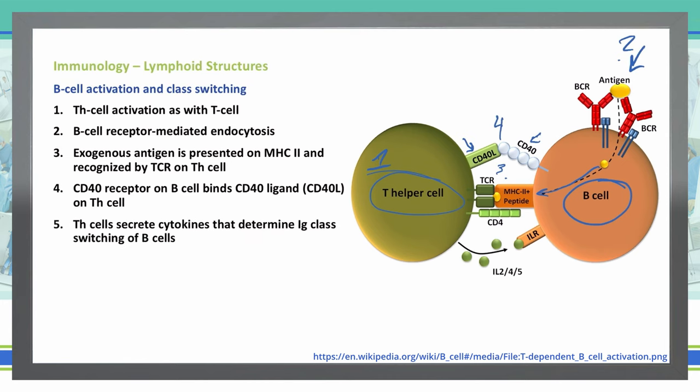Then in step five, our T helper cells secrete cytokines that will determine the immunoglobulin class switching of B cells. Coming out of the T helper cell are these various cytokines that are secreted, which will then determine the type of immunoglobulin that the B cell switches to.